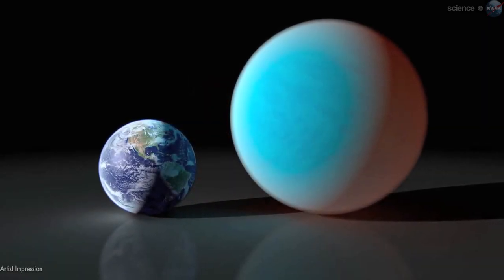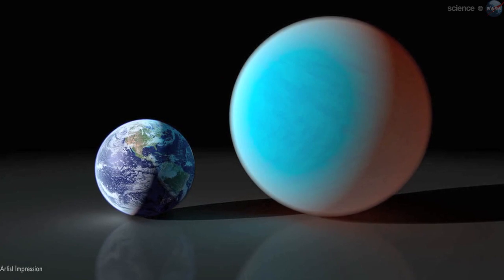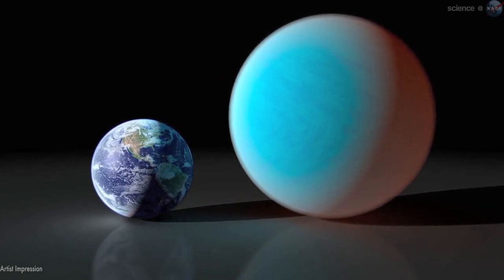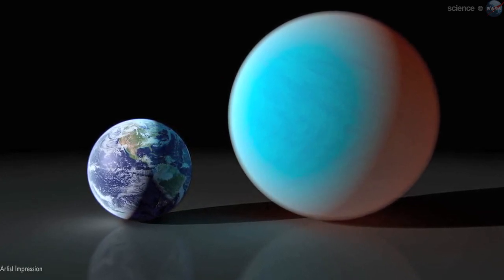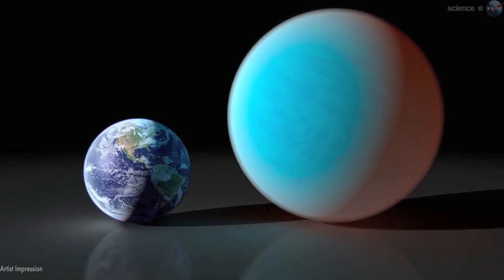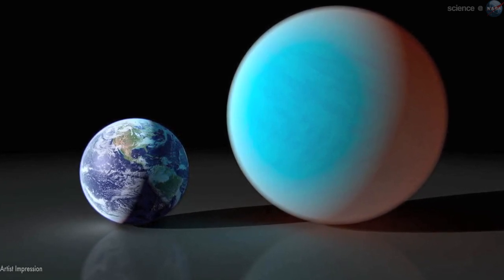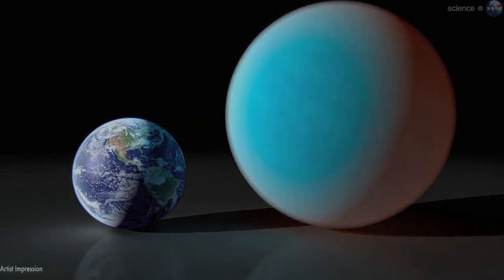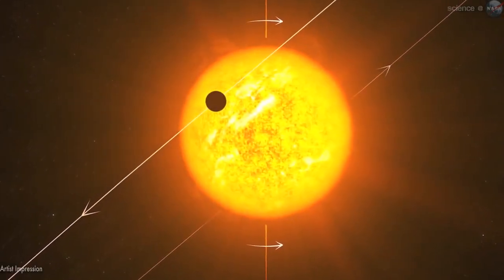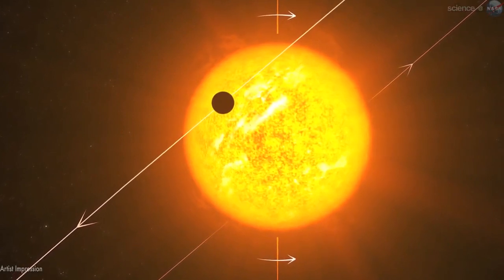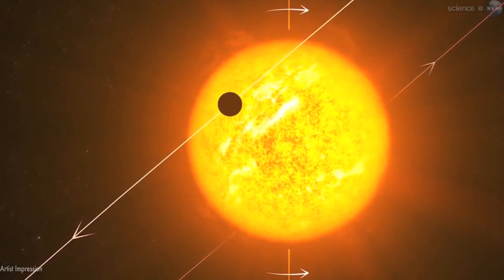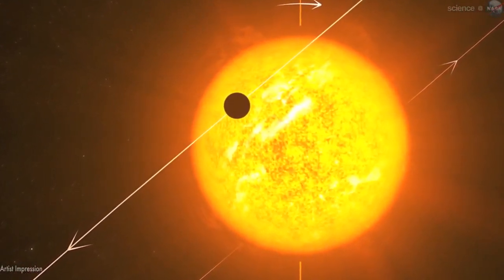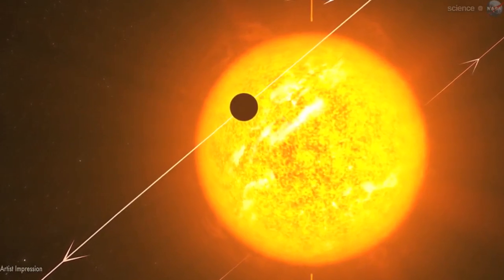According to the new observations, 55 Cancri e has a mass 7.8 times and a radius just over twice that of Earth. Those properties place 55 Cancri e in the super-Earth class of exoplanets, a few dozen of which have been found. Only a handful of known super-Earths, however, cross the face of their stars as viewed from our vantage point in the cosmos. So 55 Cancri e is better understood than most.